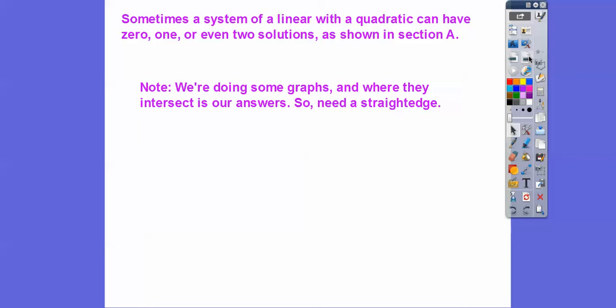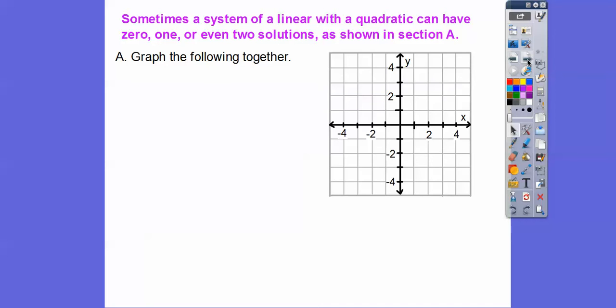A system of a linear with a quadratic can have zero solutions, one solution, or even two solutions. We'll cover that in section A. Students will need a straight edge because we're going to be graphing — a good reminder of how to graph lines and parabolas.